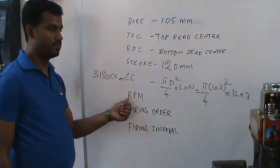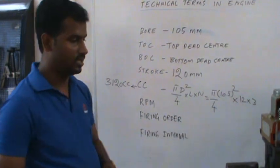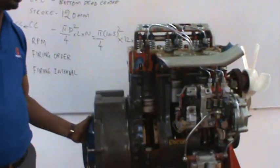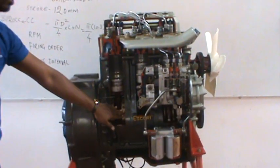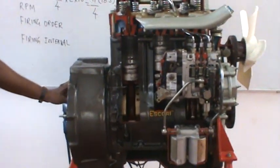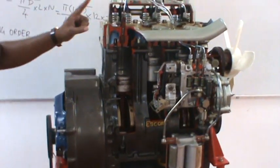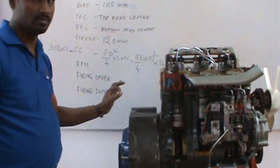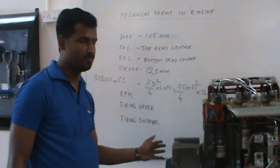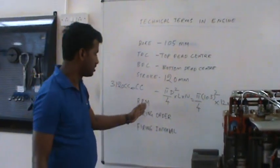Next is RPM. RPM is the revolutions per minute of the crankshaft. We have a crankshaft. At the end, we have a flywheel also. The number of revolutions of this crankshaft in one minute is called as RPM.